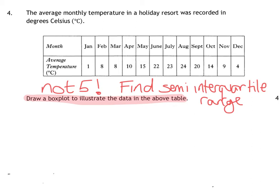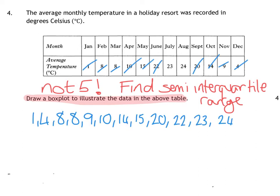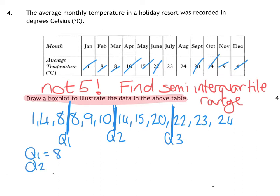Question 4. I've changed the question here because drawing box plots is not part of the National 5 course. However, they could ask you to find the semi-interquartile range or quartiles. First thing I'm going to do is write these numbers out in order — I've obviously got 12 numbers. Split that in the middle, I'm going to have 6 either side. So there is my Q2. Split them down the middle: there is my Q1, and there is my Q3. So Q1 is 8, Q2 is 12, and Q3 is 21.